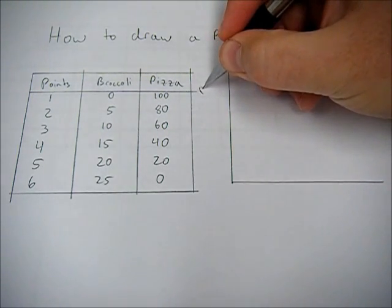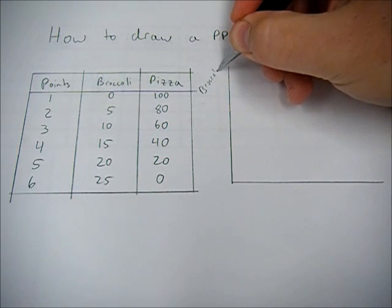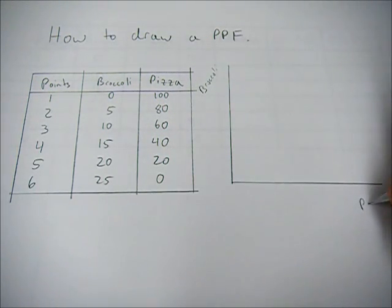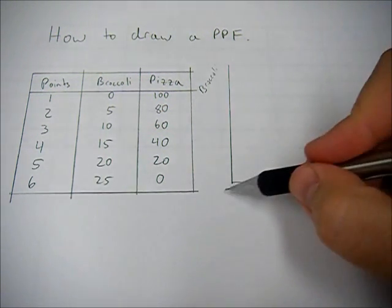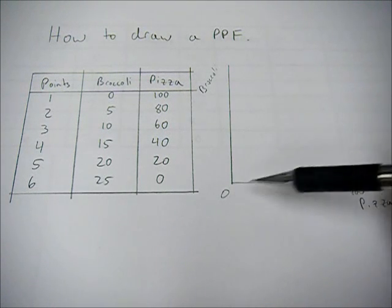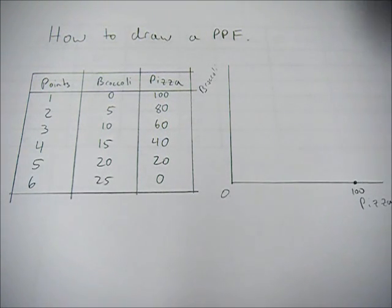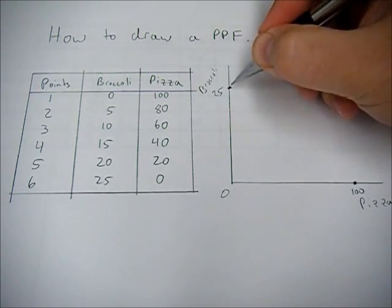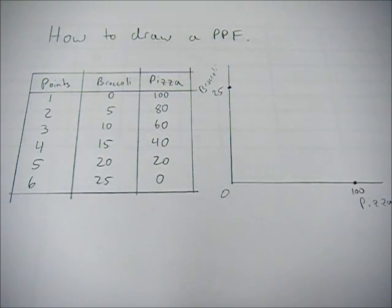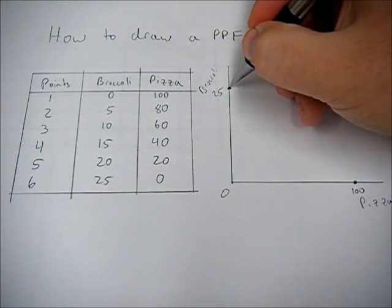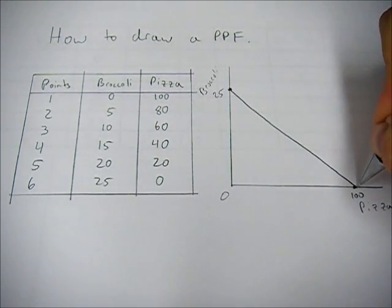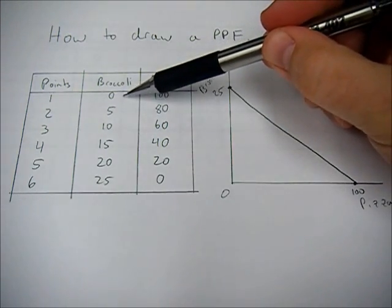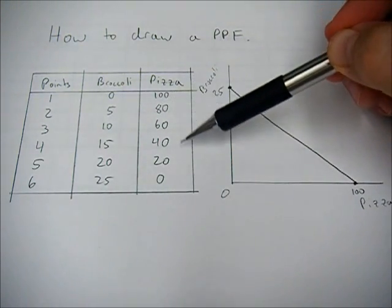So if we put broccoli on the y-axis and pizza on the x-axis, we just have to choose a point here, say for 100, and so that would be broccoli equaling 0, pizza equaling 100. Choose a point up here, broccoli 25, pizza 0, and then we can connect those two points.